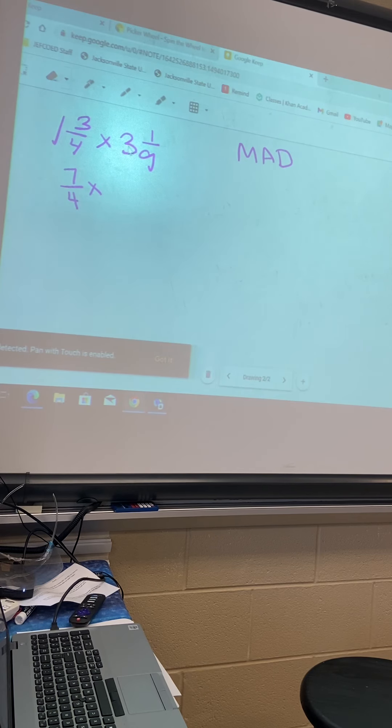Then we have 3 and 1 ninth. We're going to make it a MAD fraction. We're going to multiply 3 groups of 9, which is? Come on, I need you to answer, because remember we're on the side schedule now. You said you had your running shoes on. Okay, 27. Then you're going to add? What would that be? 28. 28. And then you're going to write it as a division. You keep the denominator the same. So 28 over 9.